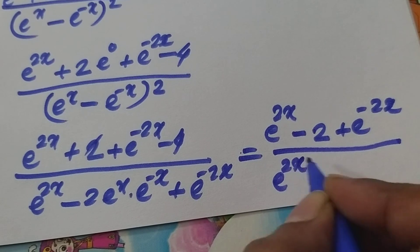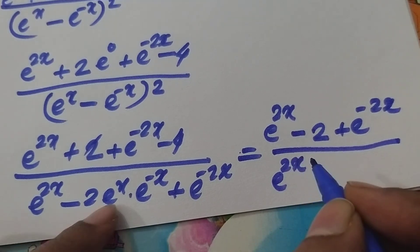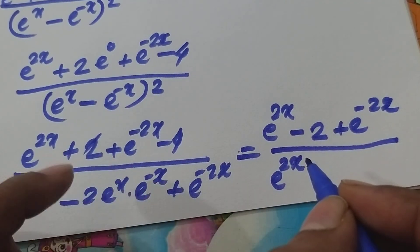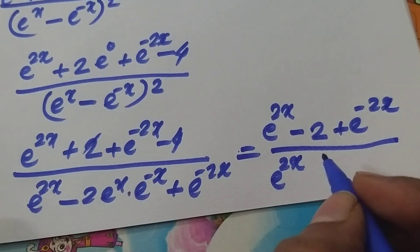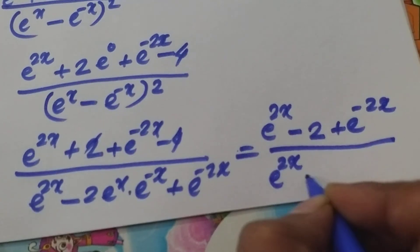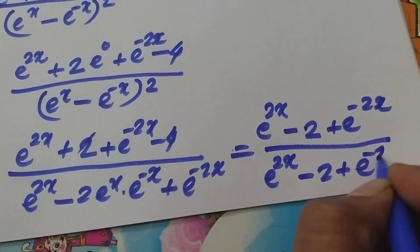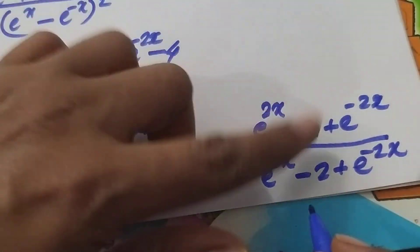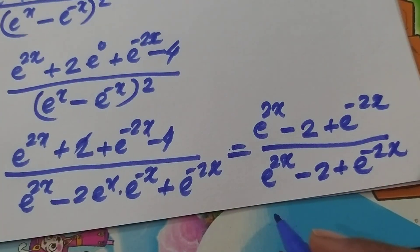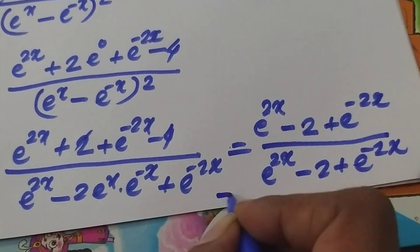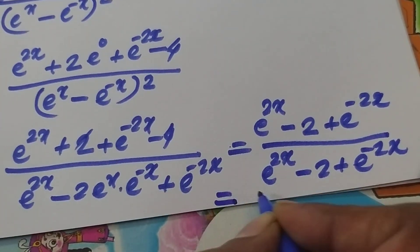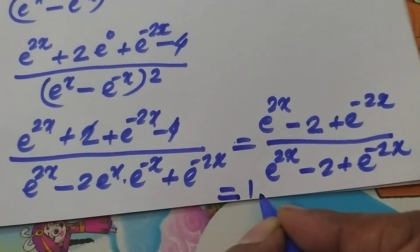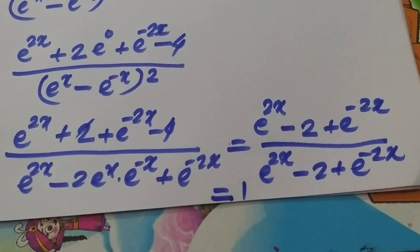The denominator becomes e^(2x) minus 2 plus e^(-2x). The numerator and denominator are the same values, so they cancel, giving the result equal to 1. Thus the proof is completed.